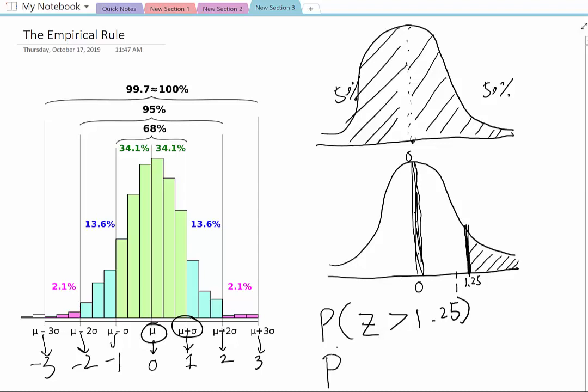Now I'm gonna do one more, P, if z-score is less than negative 1.25. So I'm gonna locate negative 1.25 first. I'm just gonna say somewhere right here, 1.25 negative. Give us vertical line right here, and it's less than that.